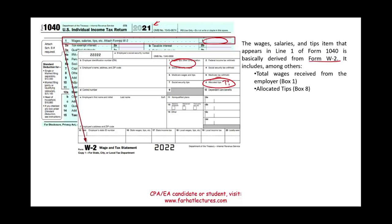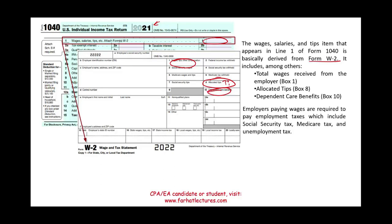Allocated tips assume that if you generated a certain amount of sales, you should be receiving a corresponding amount in tips. In case you did not report all tips, they are allocated in Box 8 as part of your wages. Also, Box 10 dependent care benefits — if the employer provides any dependent care benefit, that is also reported on the W-2 in Box 10 and is included in income.